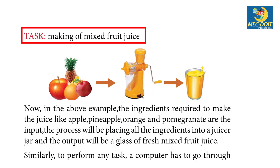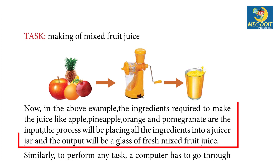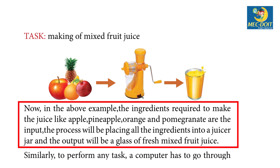Let us try to understand the IPO cycle by taking an example: making of mixed fruit juice. The ingredients required to make the juice — like apple, pineapple, orange, and pomegranate — are the input. The process will be placing all the ingredients into a juicer jar, and the output will be a glass of fresh mixed fruit juice.